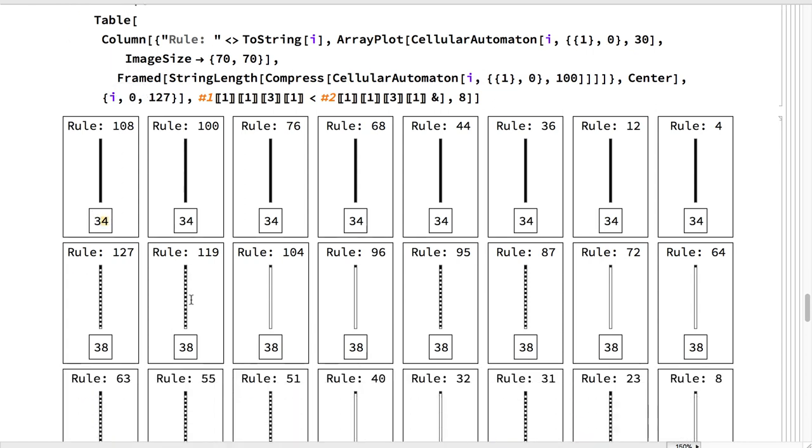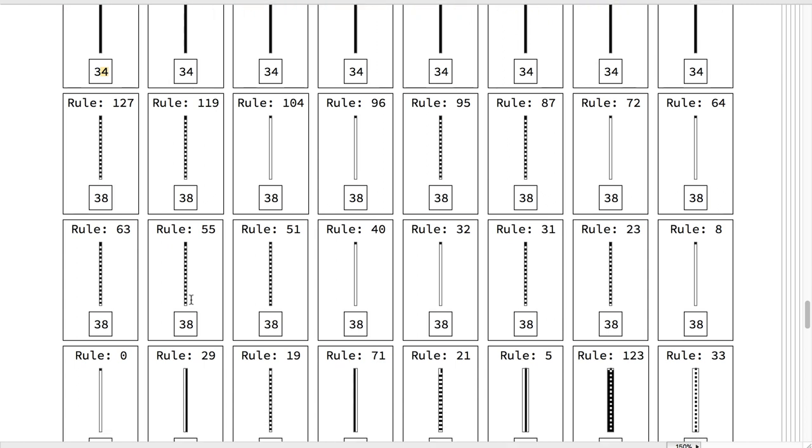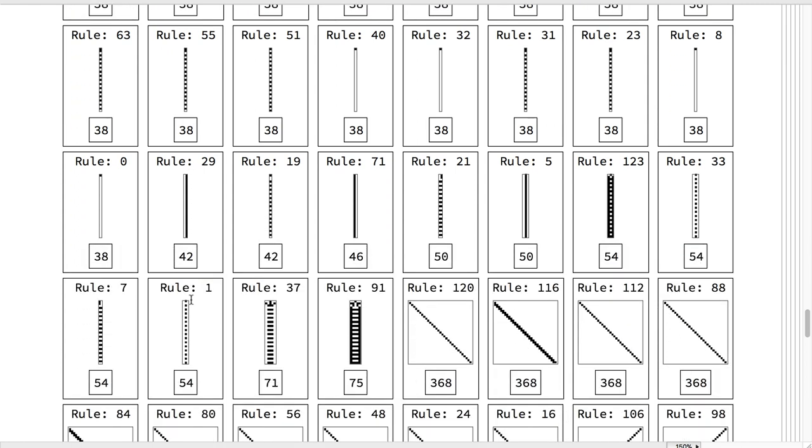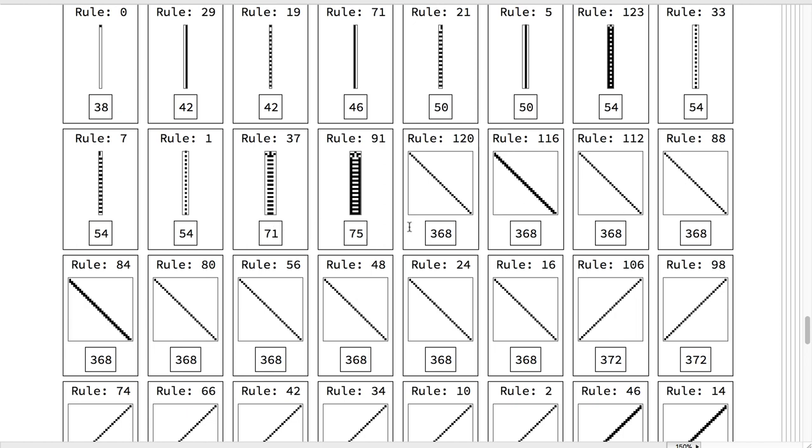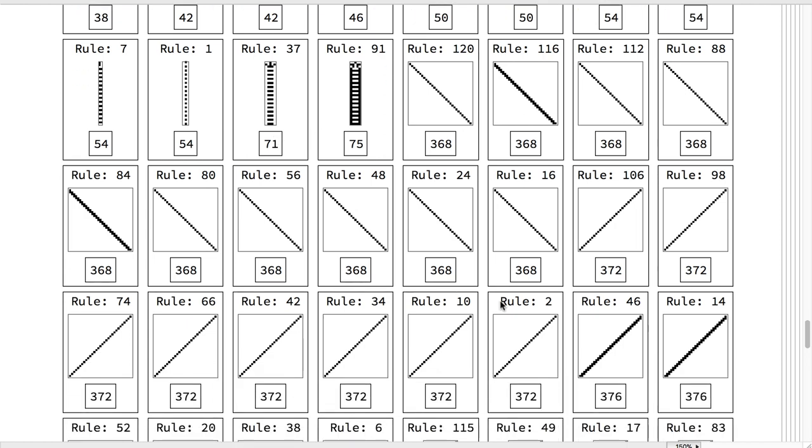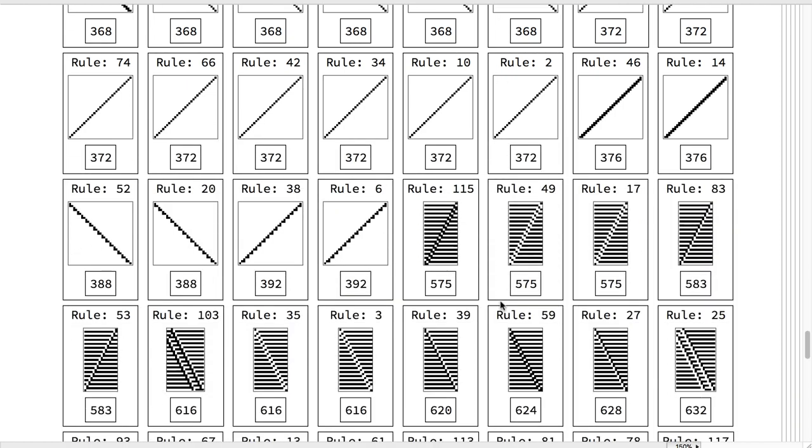Here is a table of elementary cellular automata rules sorted from highest compressibility and thus lowest estimated algorithmic complexity by using lossless compression algorithm, in this case compress, and it goes from highest compressibility to lowest compressibility or highest estimated algorithmic complexity.